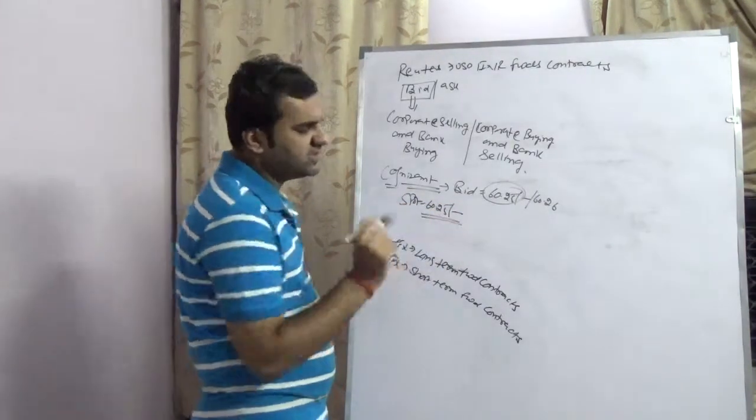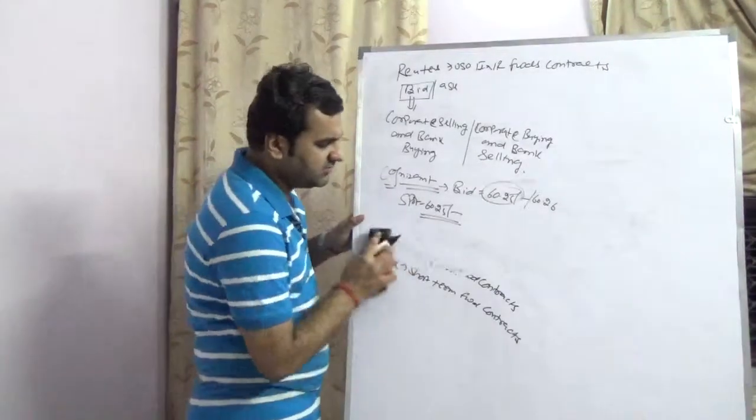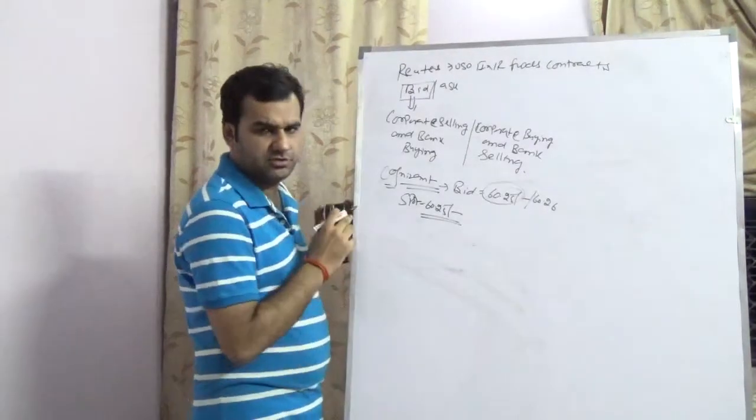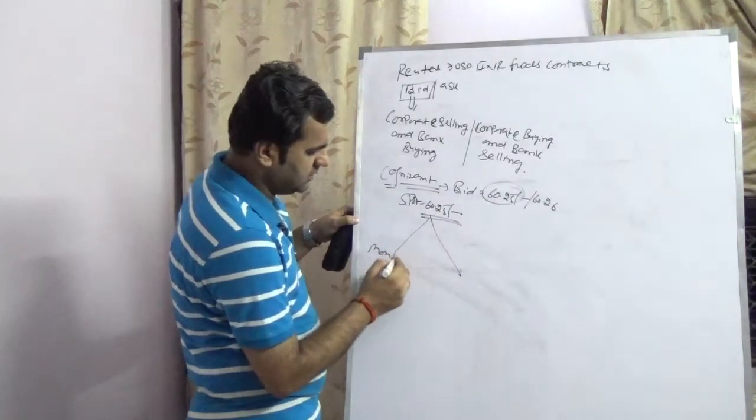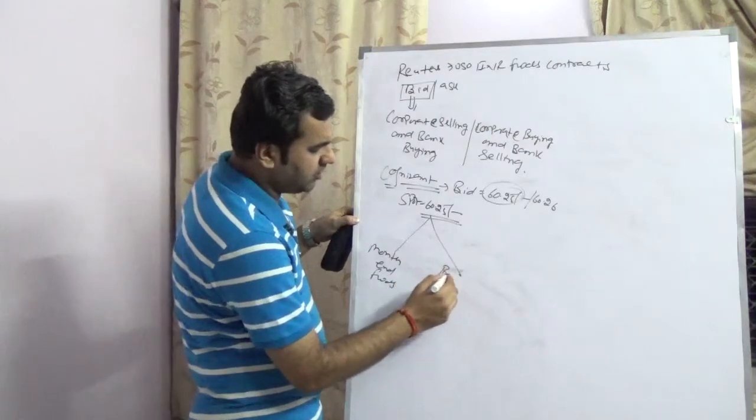Then to fix the forward price. Forward price will further categorize into two parts. After fixing the spot, you can further categorize forwards into two parts: month-end forward and broken period forward.